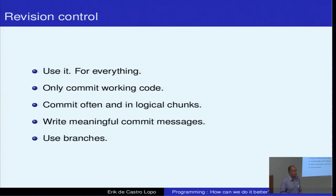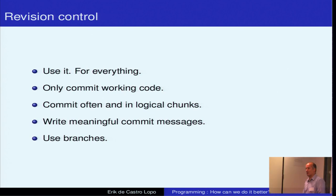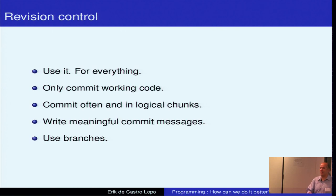Committing often and in logical chunks — you hear the classic horror stories of people who don't commit anything until they're working, so they work for like three weeks and then do a commit. Meaningful commit messages are very, very valuable for when you want to go back and look at what happened back in July last year. A really useful practice is to put the bug number in the commit message for the commit, and then you've got a cross-reference between the two. Very, very valuable.